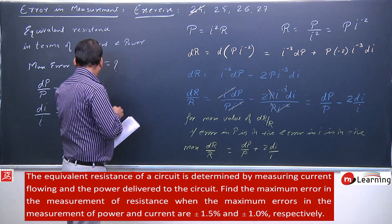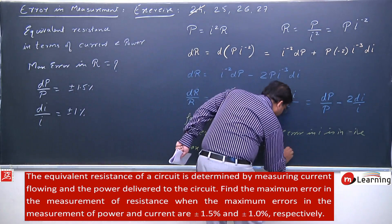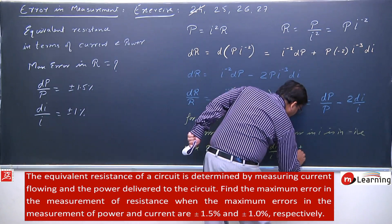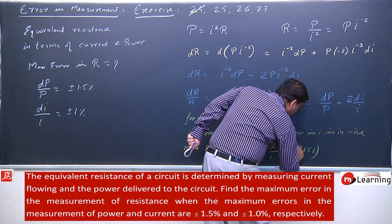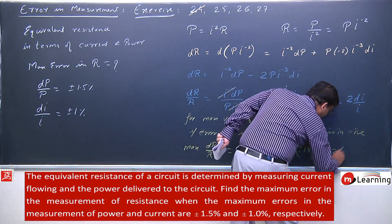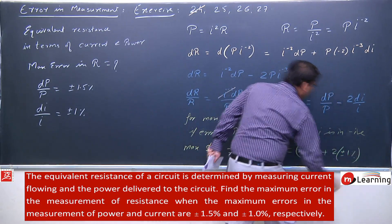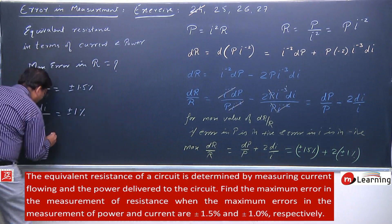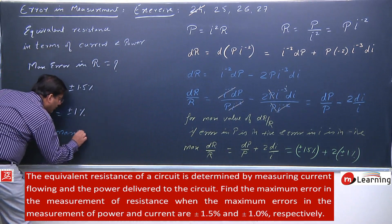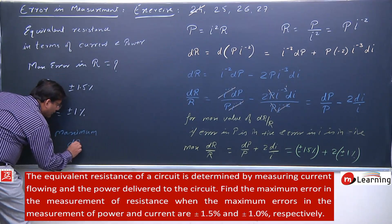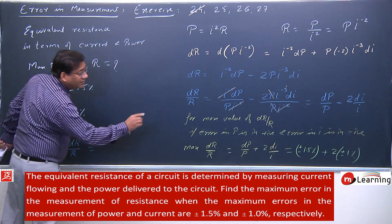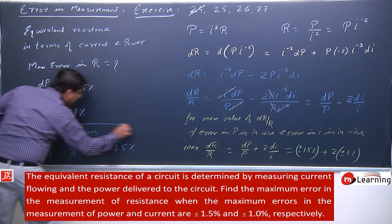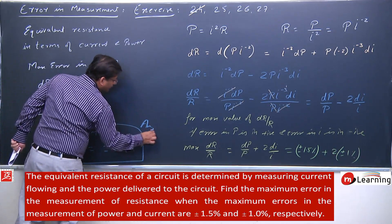So maximum dR/R = dP/P + 2 times dI/I. Substituting: dP/P is ±1.5%, and 2 times dI/I is 2 × ±1% = ±2%. Therefore maximum dR/R = 1.5 + 2 = ±3.5 percent.